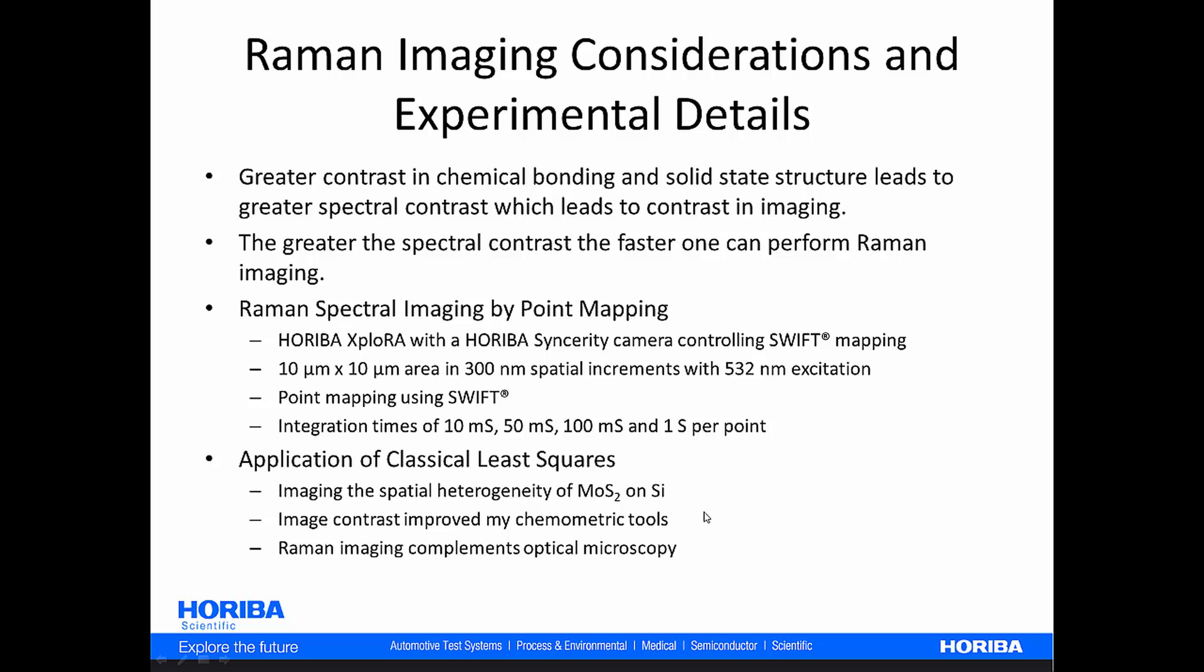And finally, we'll show you how the application of a classical least squares algorithm, and there are other chemometric tools, can really help you in imaging, particularly fast Raman imaging. Here, in this session, we're imaging the spatial heterogeneity of molybdenum disulfide flakes on a silicon substrate. And our image contrast is improved by the chemometric tools. And what I hope you'll see is that the Raman imaging is quite complementary to the optical microscopy that you see.